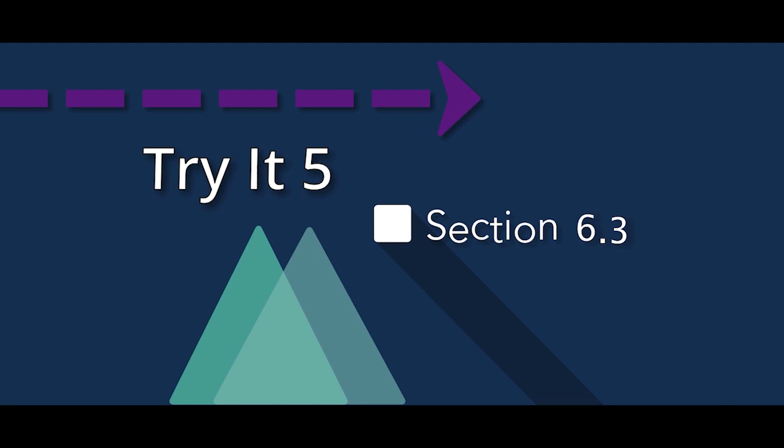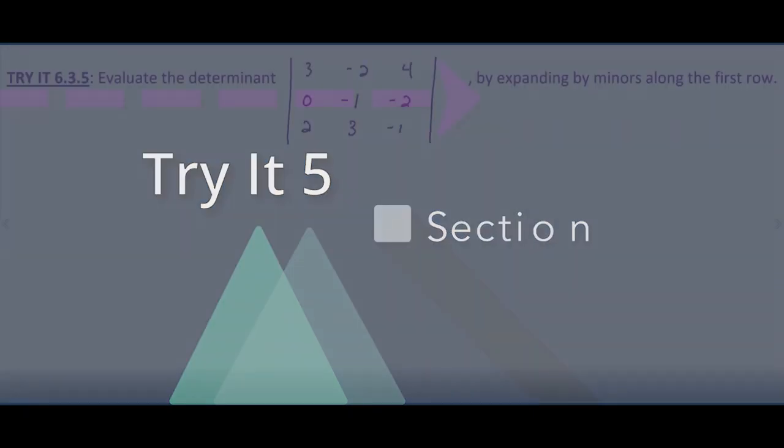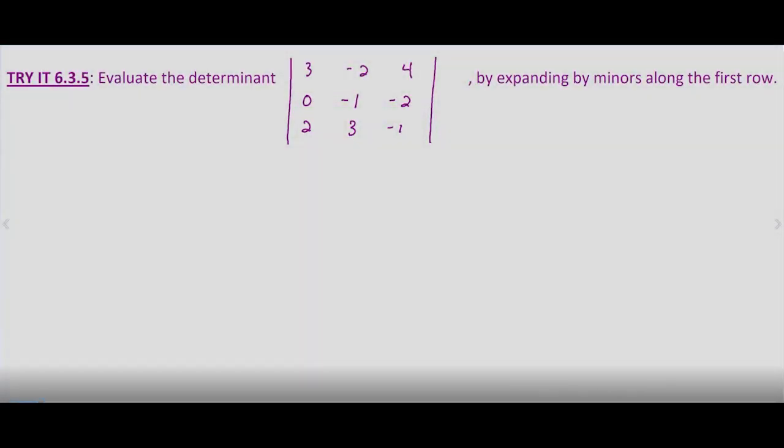So now we're being asked to evaluate the determinant by expanding by minors along the first row. So if you look back to how that's explained, remember that basically we're taking the minor for each term in the first row.